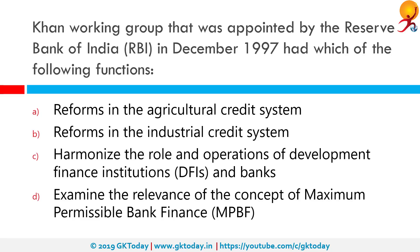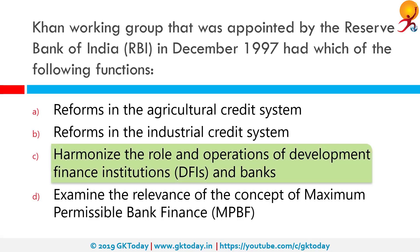The Khan Working Group, appointed by the Reserve Bank of India in December 1997, had which of the following functions? The correct answer is that it was to harmonize the role and operations of development finance institutions, or DFIs, and banks. The HR Khan Committee on Corporate Bond market also proposed that banks should be allowed to pledge corporate bonds as collateral to borrow funds from the Reserve Bank's overnight repo window.